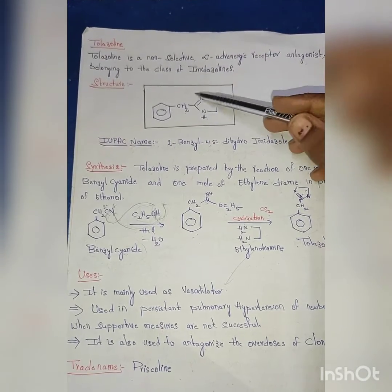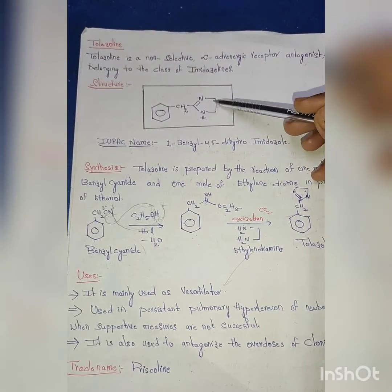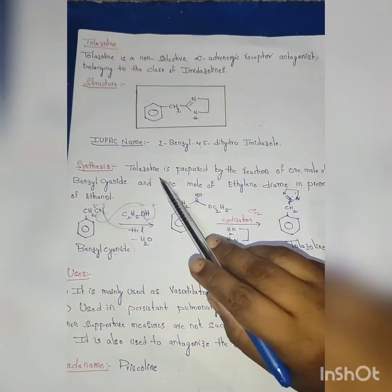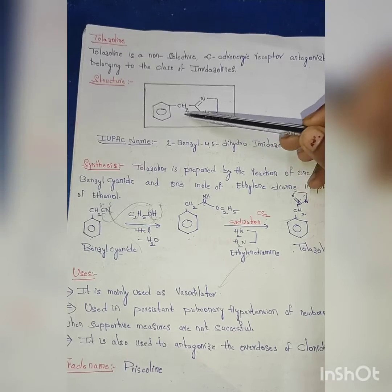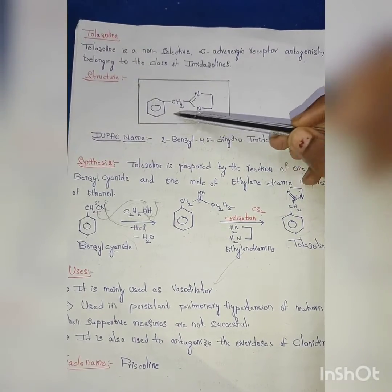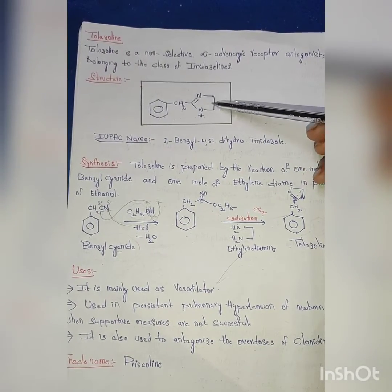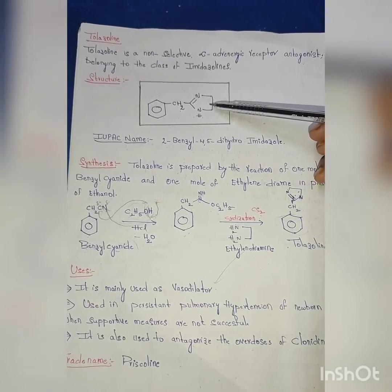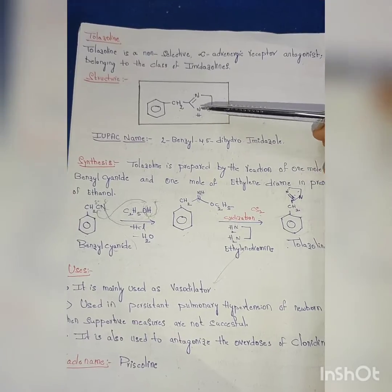This imidazole derivative has a double bond at four and five positions. That is the reason the name is 2-benzyl - benzene and CH2 is the benzyl group - 4,5-dihydro imidazole. There is no double bond at four and five, so it's called 4,5-dihydro imidazole.